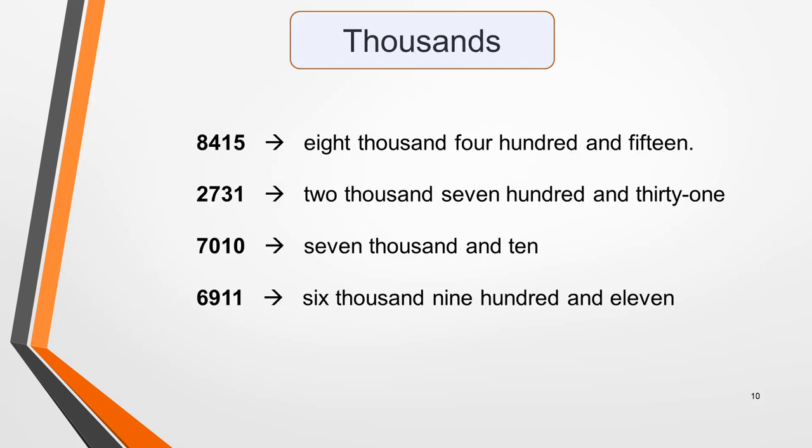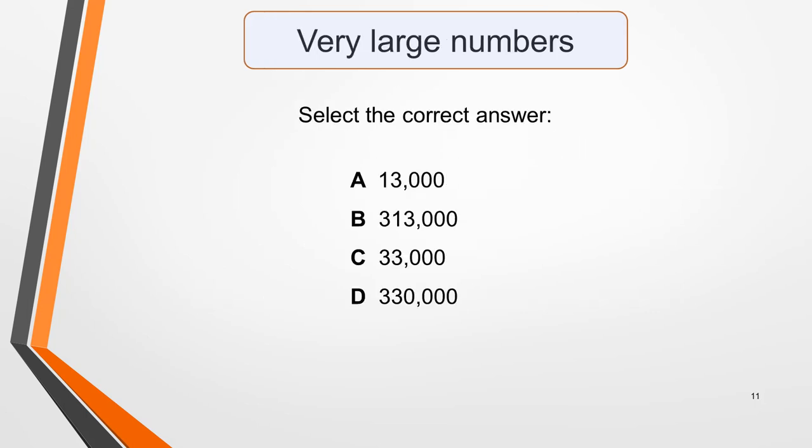Next, we come to numbers in the thousands. These are less common in the IELTS listening test, but come up occasionally. Practice writing them down and speaking them out loud to get familiar with how they sound. It can be helpful to write the numbers in both figures and words — for example: 8,415; 2,731; 7,010; 6,911. Very large numbers will most likely be used in a context where they're rounded up or down to the nearest ten or hundreds of thousands, which can make them challenging to write correctly. Listen to this sentence and select the correct answer: 'There are over 33,000 known species of fish on the planet.' The correct answer is C.